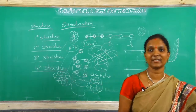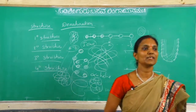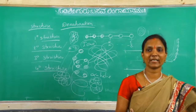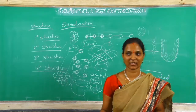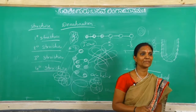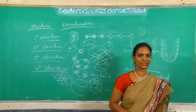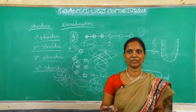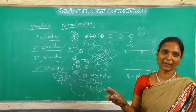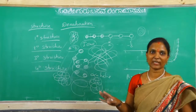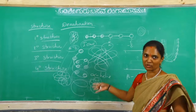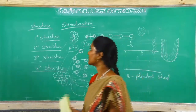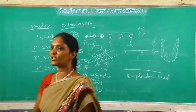If proteins lose their activity that is called denaturation of proteins. Breaking of secondary, tertiary, quaternary structure takes place. But no change in primary structure - meaning the amino acid bonding, the covalent peptide bond, does not break. Only remaining bonds like hydrogen bonds and disulfide bonds break. That is about denaturation of proteins.